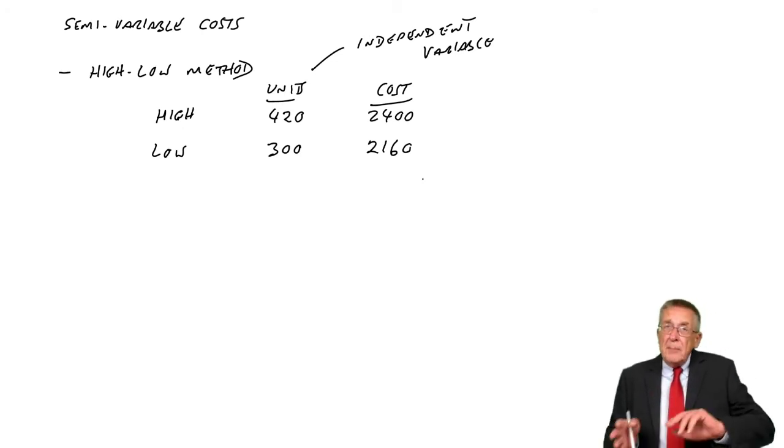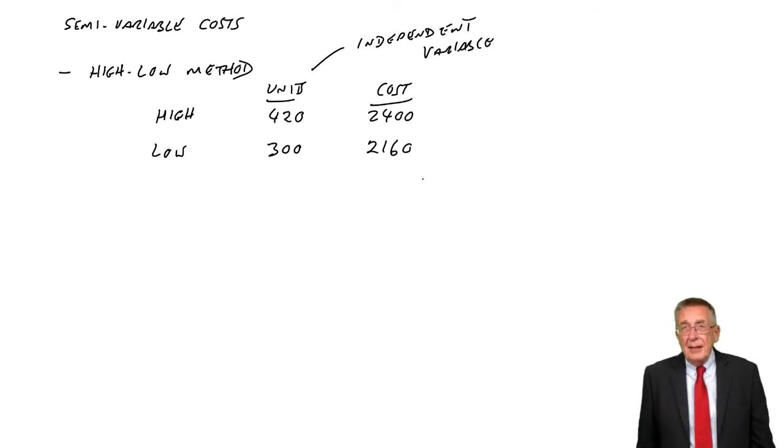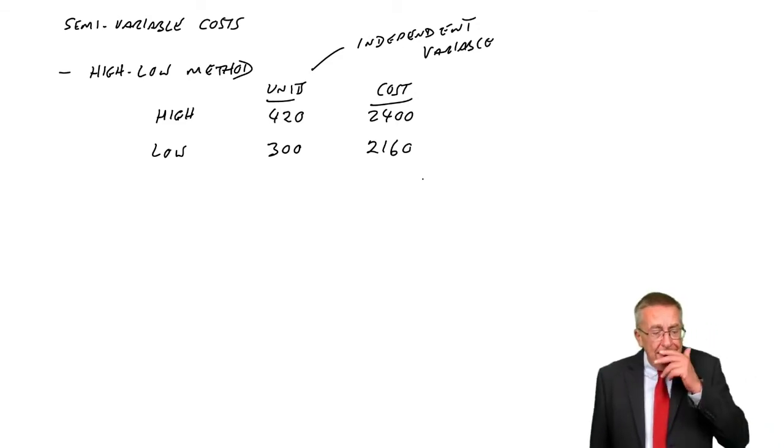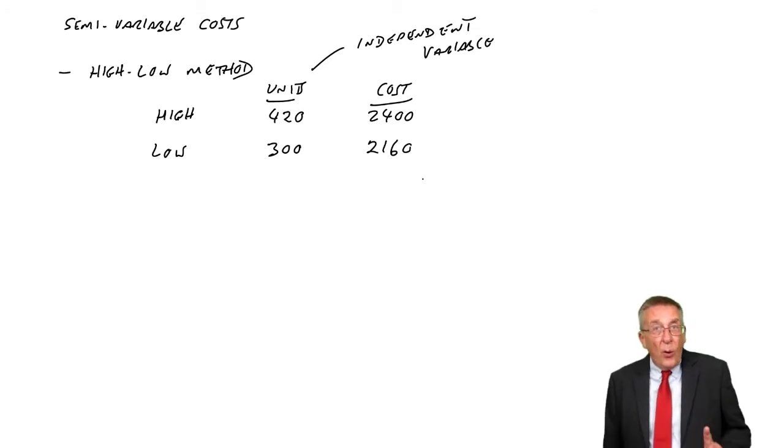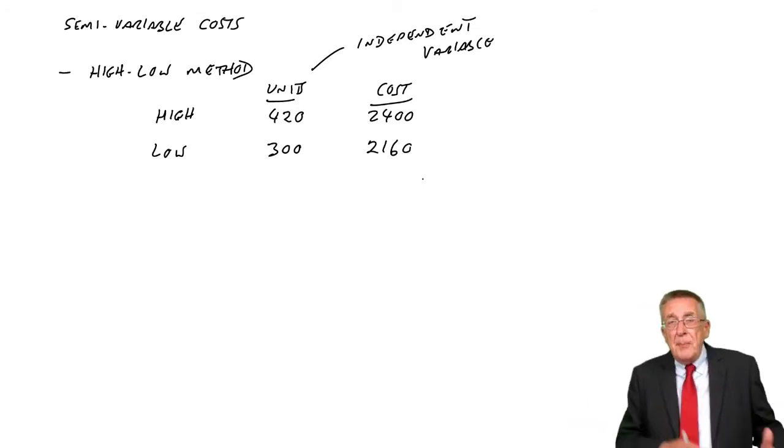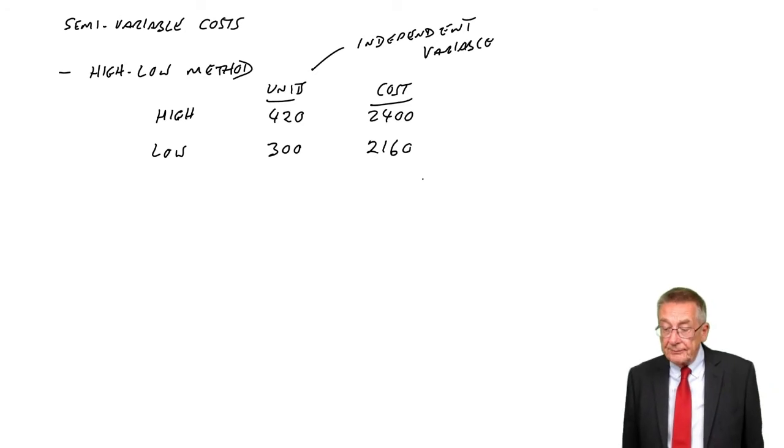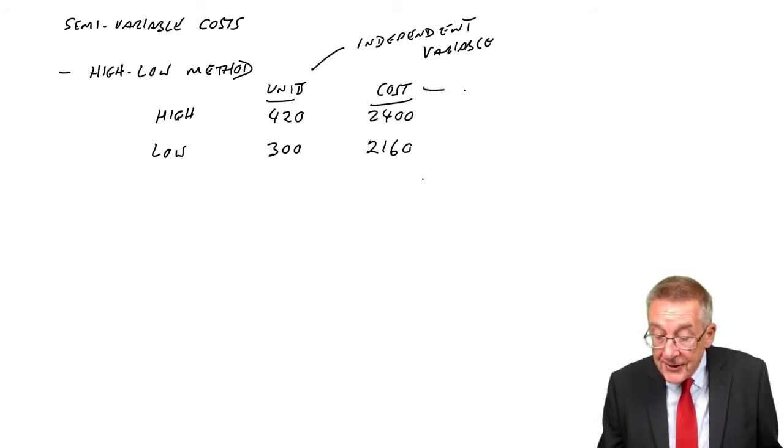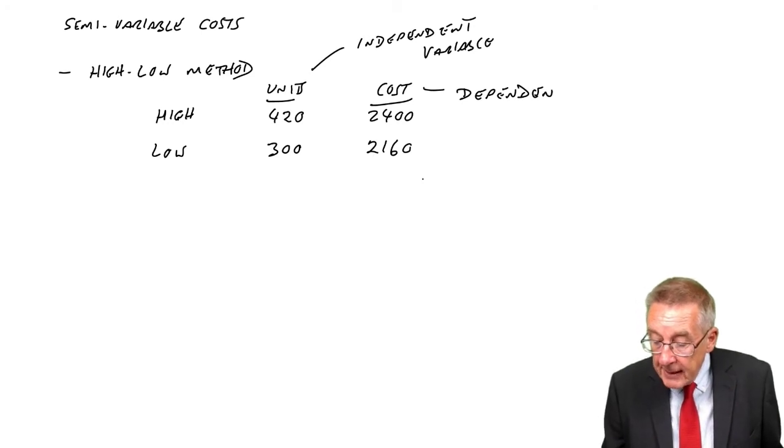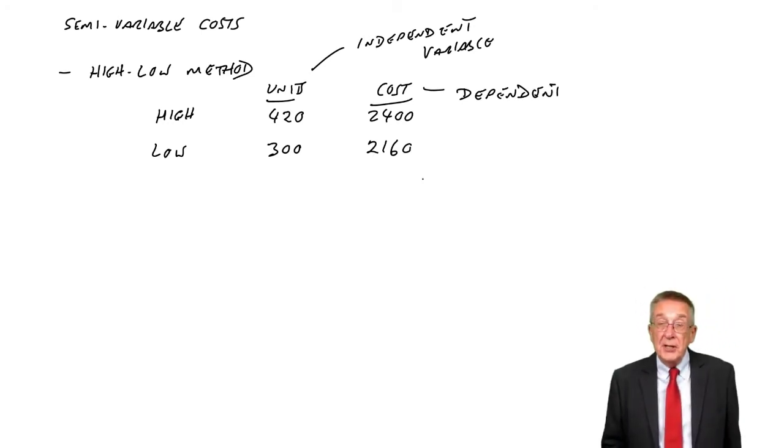One depends on the other. So if you're unsure, ask yourself, does the production depend on what the cost is? Or does the cost depend on how many we produce? Well, surely, the cost will depend on the production. The cost is therefore the dependent variable, because it depends on how many we produce.